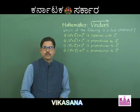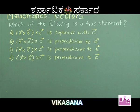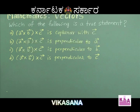Next question: which of the following is a true statement? Option A — vector A cross (vector B cross vector C) is coplanar with vector C. Option B — it is perpendicular to vector A. Option C — it is perpendicular to vector B. Option D — vector A cross (vector B cross vector C) is perpendicular to vector C.